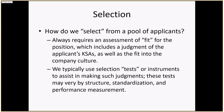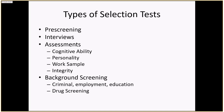The types of selection tests we generally see include pre-screening, interviews (which are the most common), different types of assessments such as cognitive ability, personality, work sample, and integrity testing, and then different types of background screening such as criminal, employment, education history, and drug screening.